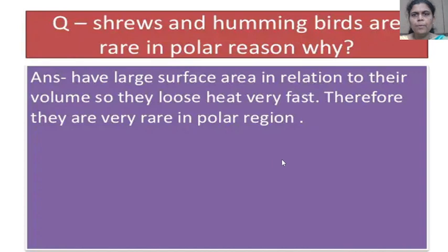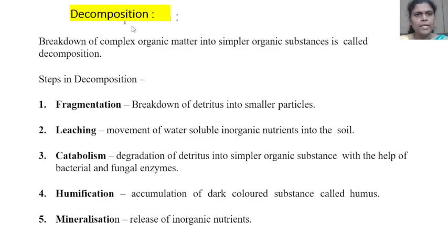Shrews and hummingbirds are rare in polar regions. Why? Because they have a large surface area in relation to their volume, so they lose heat very fast. Therefore, they are very rare in polar regions.